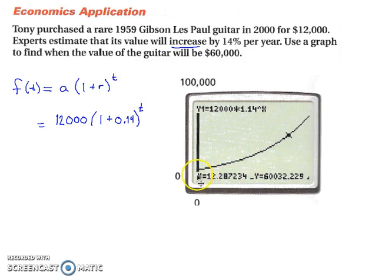So on your graphing calculator, you can hit the trace button. And trace your exponential function until you get to where the y is going to be a little bit more than $60,000. Notice that when it's a little more than $60,000, it's about 12.2 years. So it's about 12 years.